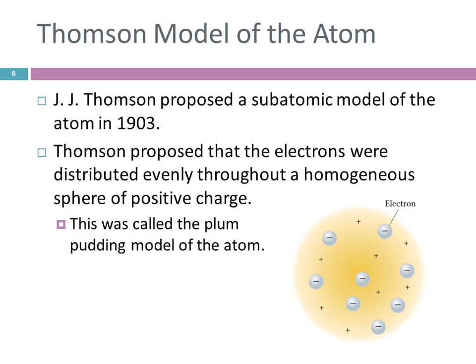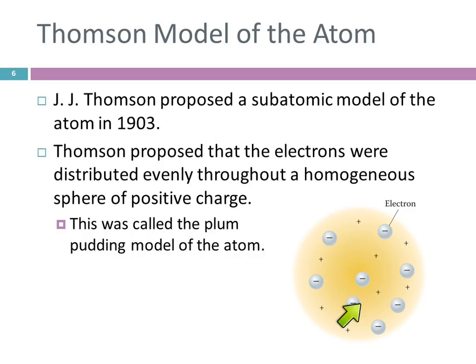We can think about it like a blueberry muffin, or like rice pudding — pudding with rice in it. You have these rice grains swimming around in the pudding. So the electrons are the chunks, and this positive sphere is the sort of semi-liquid-y stuff. And so it could move around. That was his idea.